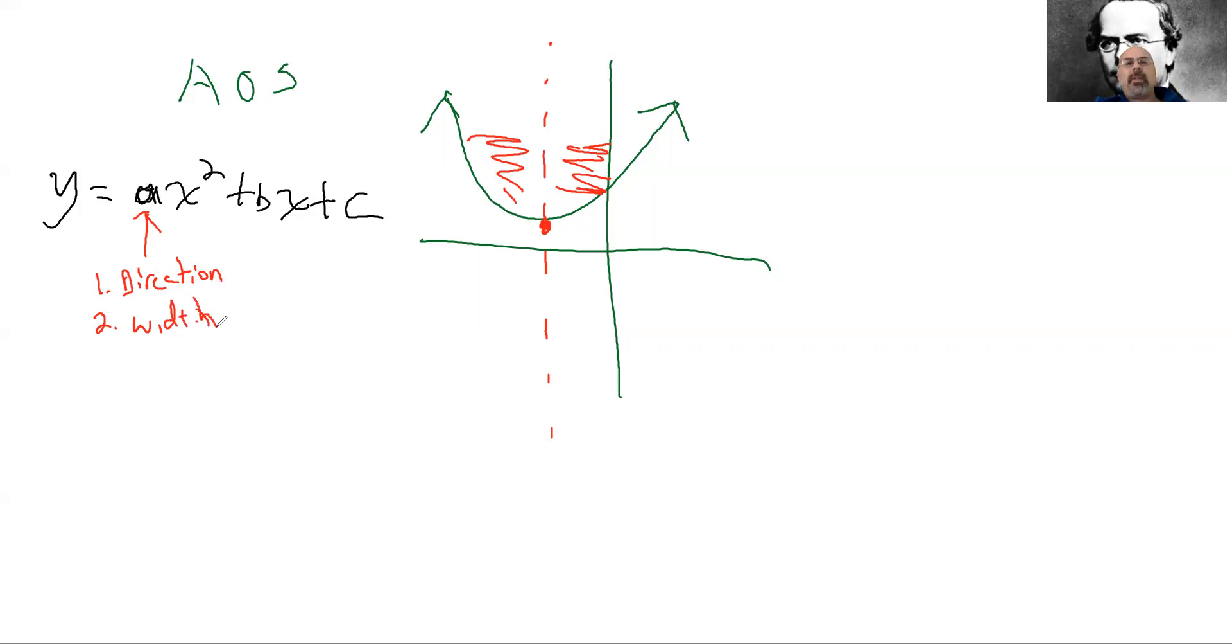Now we didn't get into actual numbers of the width, but knowing that the smaller this number is, or closer to zero, the wider my parabola is going to be. The larger this number is, the a value, the skinnier my parabola is going to be.